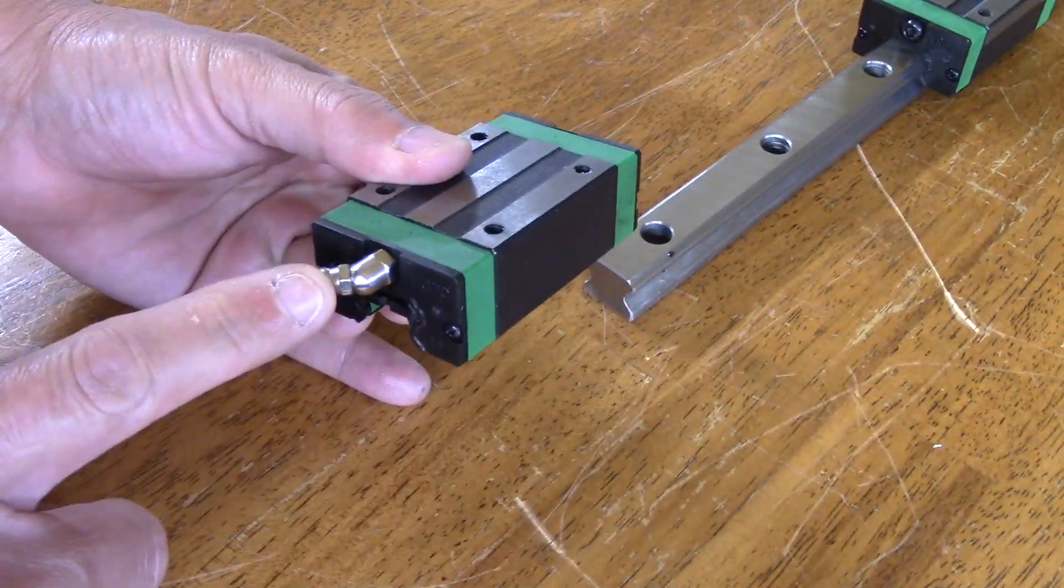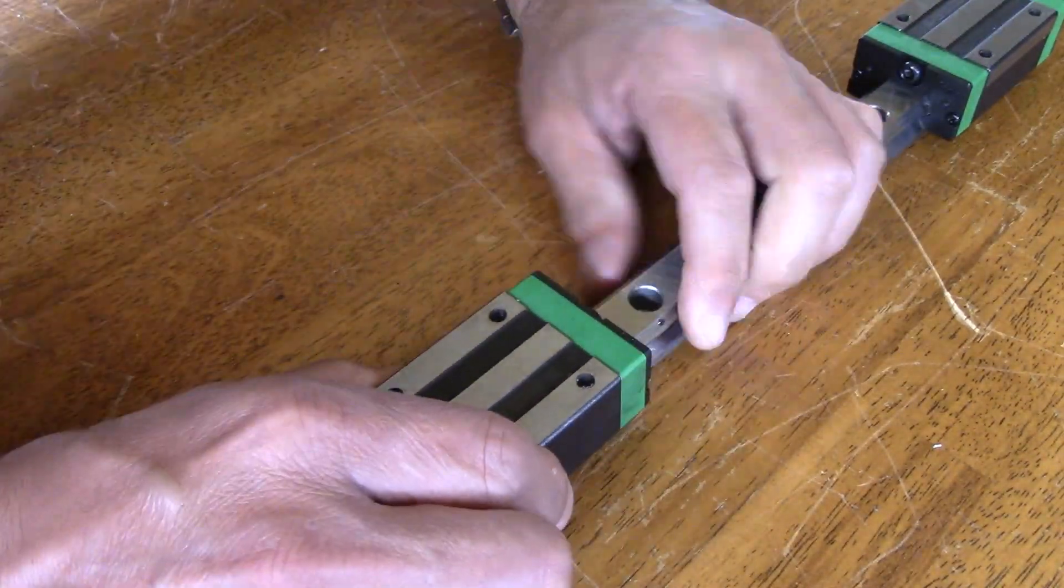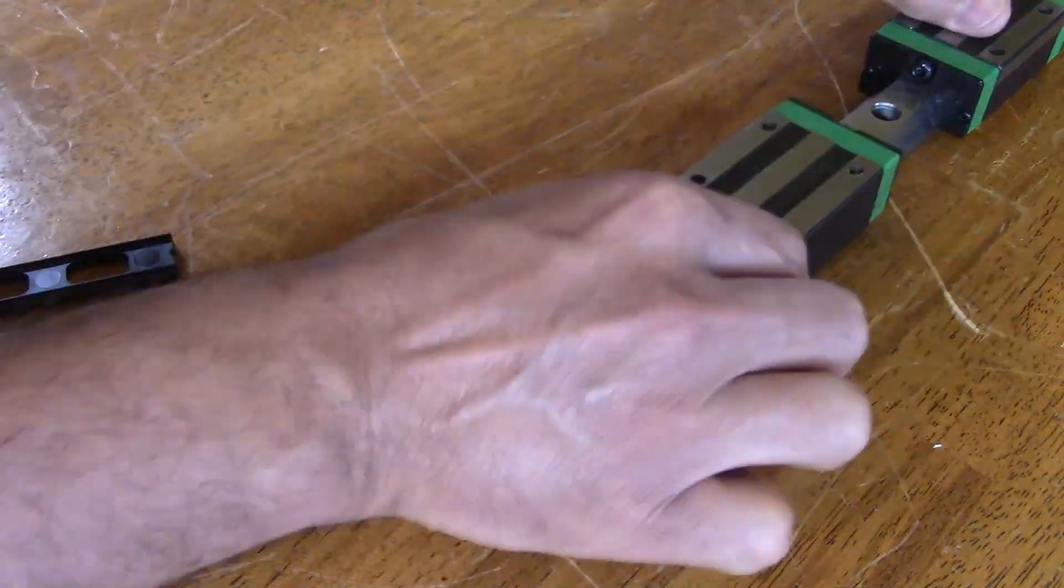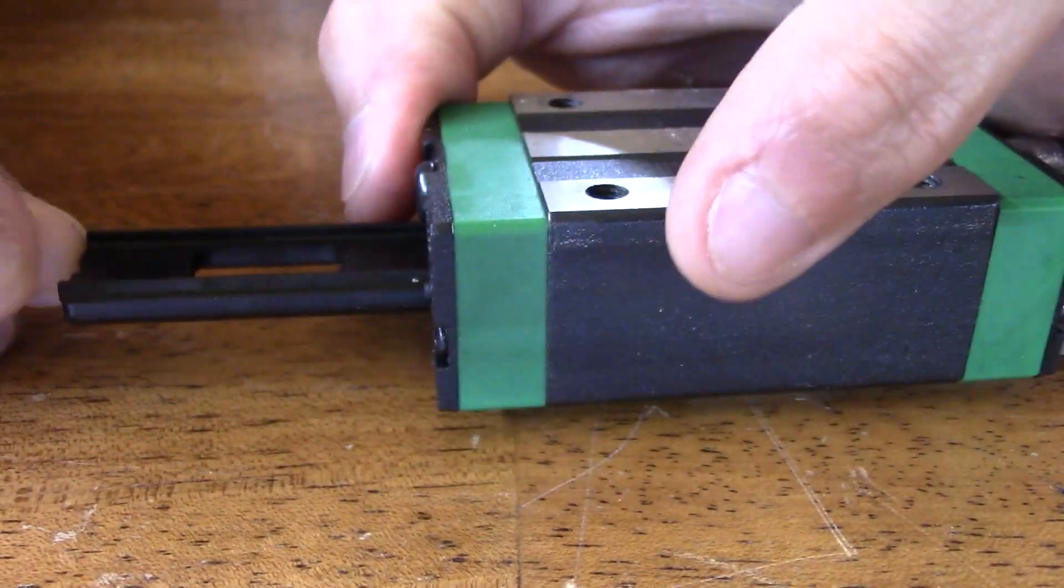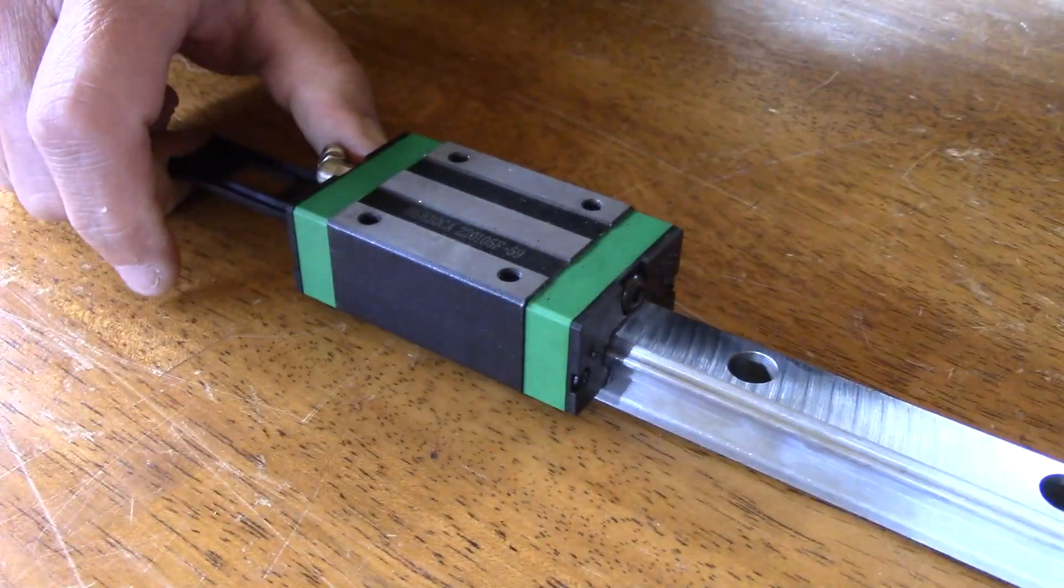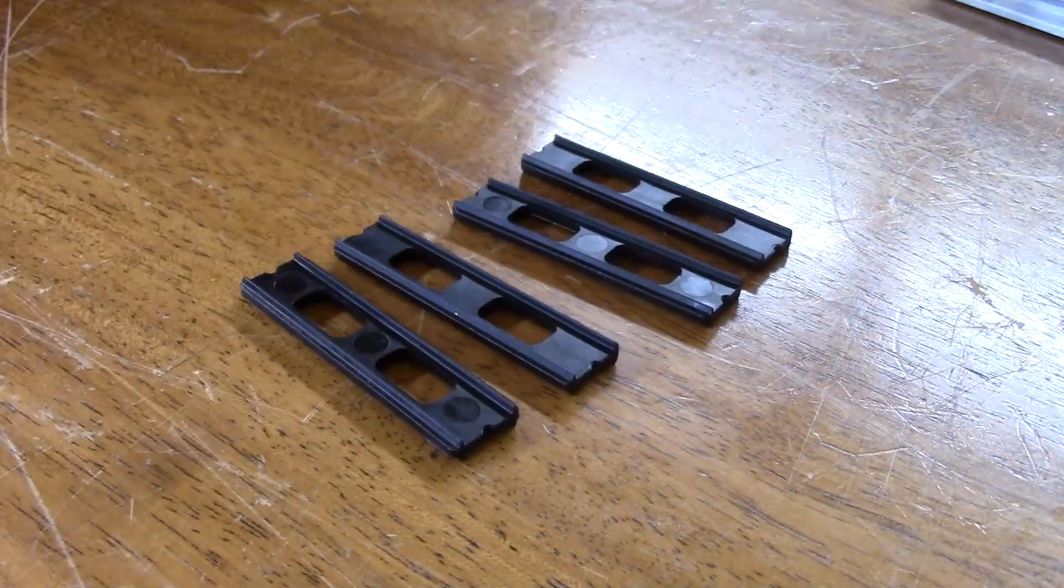Repeat with the second truck, while ensuring the grease ports are not impacted. Repeat the process for the second slide and I recommend you keep the plastic tabs in case you ever need to remove the trucks.